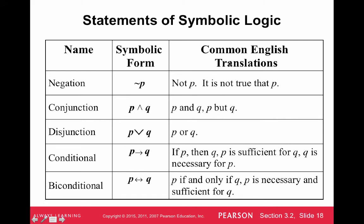To summarize all the symbols: negation uses a squiggly symbol; conjunction (and) uses ∧; disjunction (or) uses ∨; conditional (if-then) uses → with P being sufficient for Q; and biconditional (if-and-only-if) uses ↔. These are the common translations. This is a really important slide to have and remember.